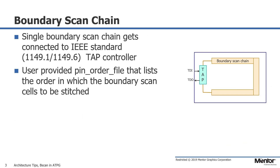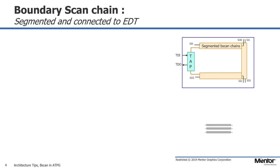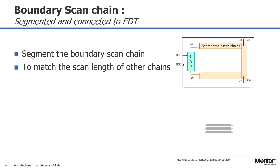Typically, the boundary scan is stitched into a single chain that gets connected to the 1149.1 or 1149.6 compliant TAP controller. The user provides the order in which the boundary scan cells need to be stitched into this chain. The boundary scan is used to perform a wide variety of interconnect tests. Within a chip, the boundary scan can also be used as compressed chains to be connected to compression logic. In the majority of cases, the single boundary scan chain is too long and can affect compression, so it may be segmented to form smaller chain lengths to match the rest of the chains.